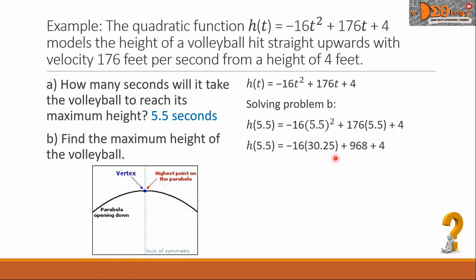Of course, in the first term here, the -16 is copied down here. In the next line, we will get the product of -16 and 30.25 and the answer is -484. So we copy the plus 968 plus 4.